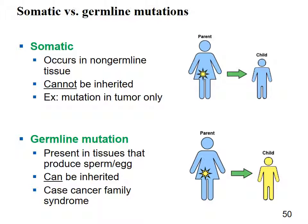Not all mutations are passed to offspring. A somatic mutation occurs only in non-germline tissue and is not inherited — it stays only in that cell lineage. A germline mutation is present in the tissues that produce sperm or eggs, so it can be inherited and can cause heritable syndromes or disorders.